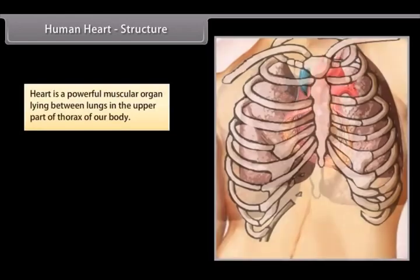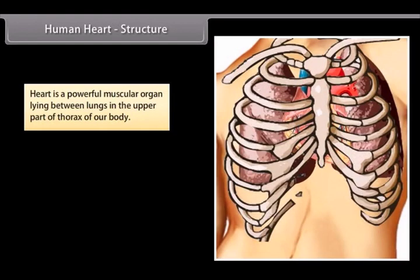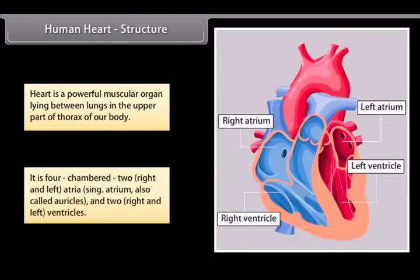Human Heart Structure. Heart is a powerful muscular organ lying between lungs in the upper part of thorax of our body. It is four chambered, two right and left atria, singular atrium, also called auricles, and two right and left ventricles.